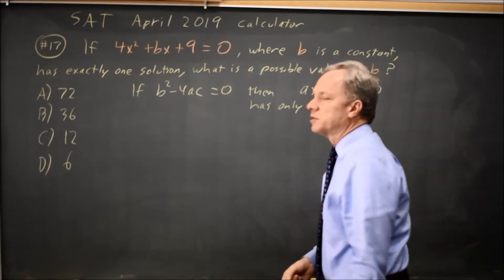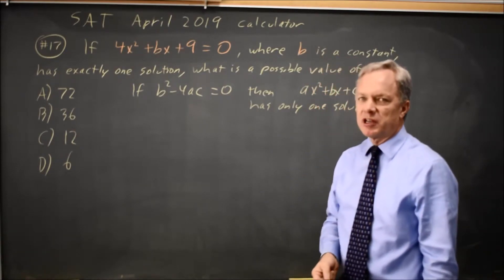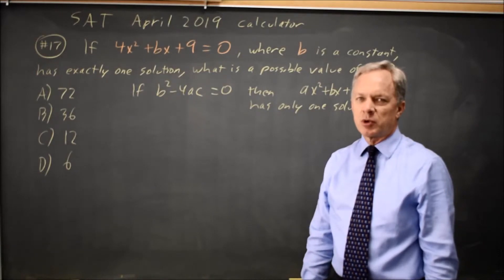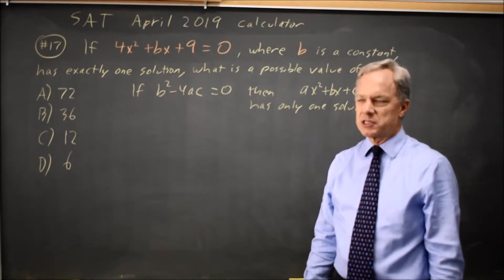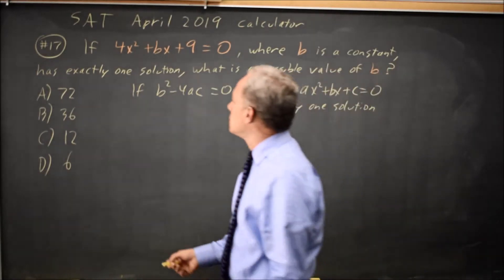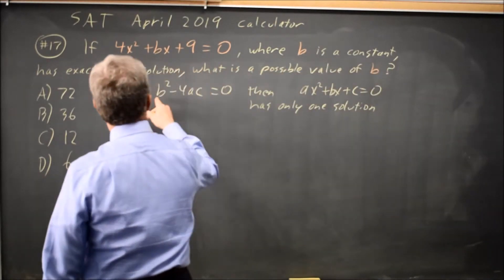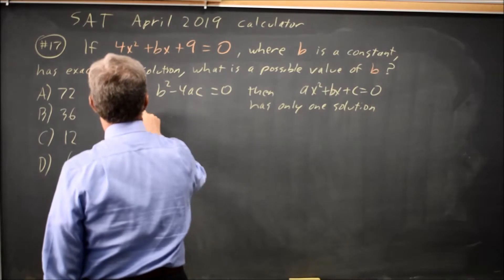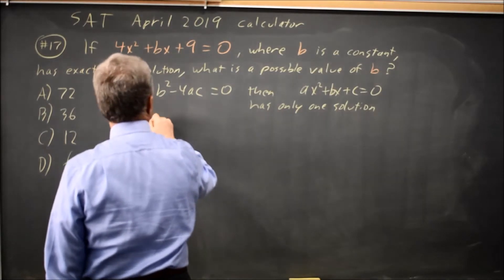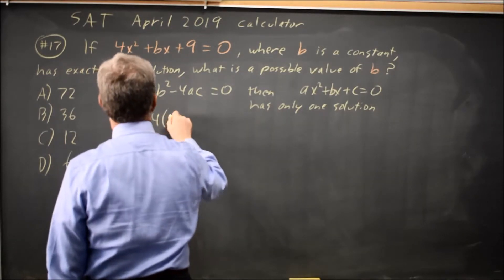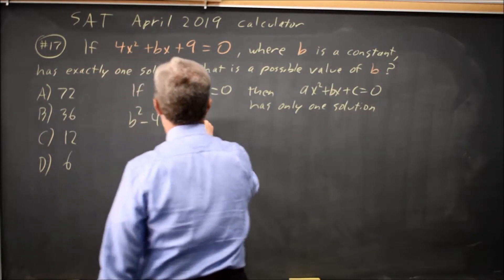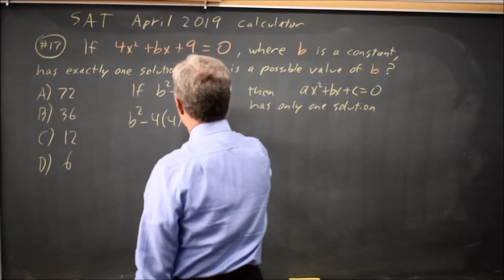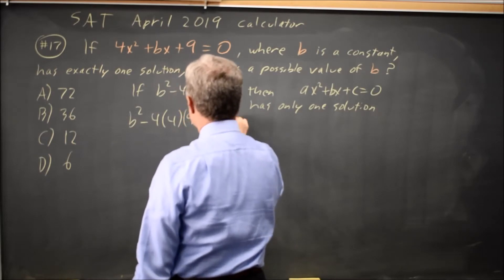College Board will fairly often ask you to find a quadratic with only one solution. So b is actually b in this equation. So b squared minus 4 times a, which is 4, times c, which is 9, equals zero.